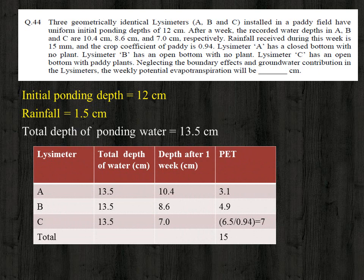For all three lysimeters the total initial ponding water is 13.5 centimeter. After one week, the depth of ponding water reduced to 10.4 cm in lysimeter A, 8.6 cm in lysimeter B, and 7 cm in lysimeter C.